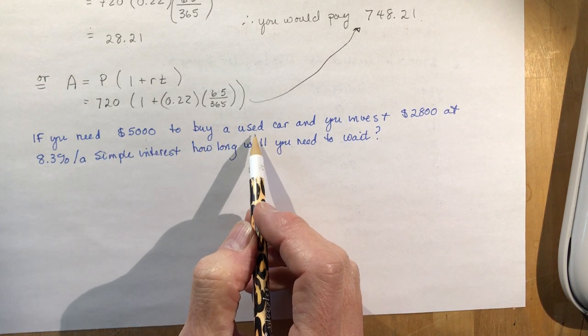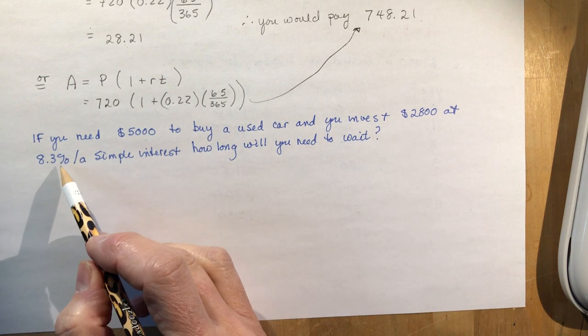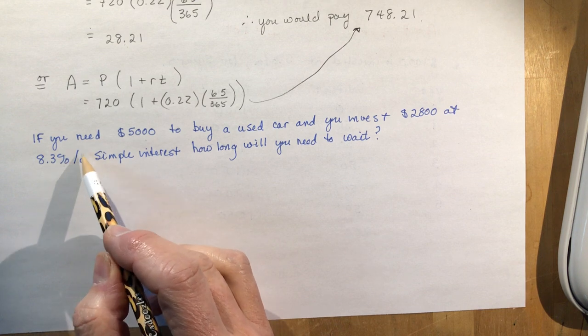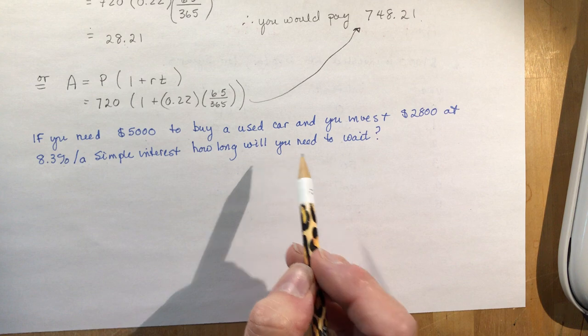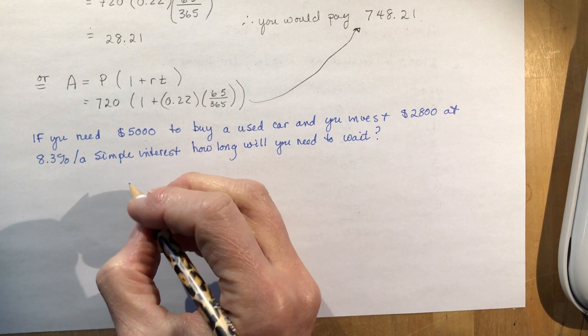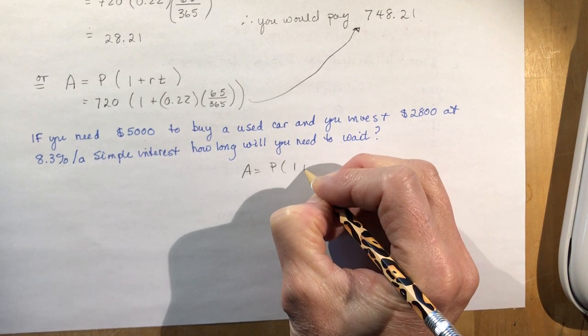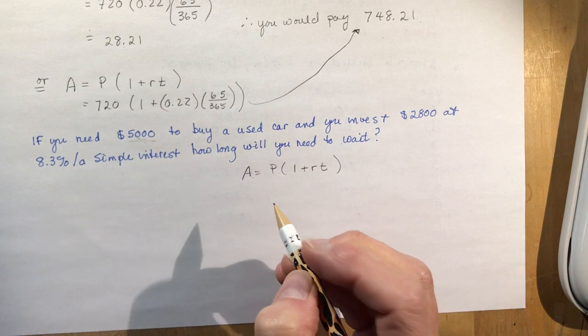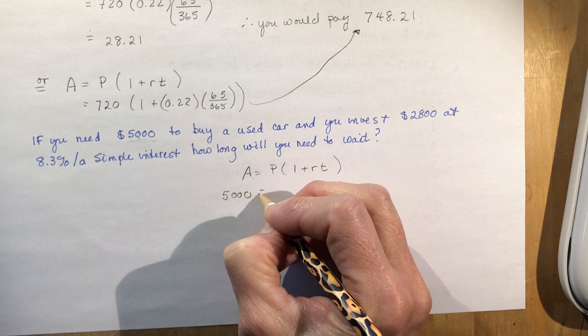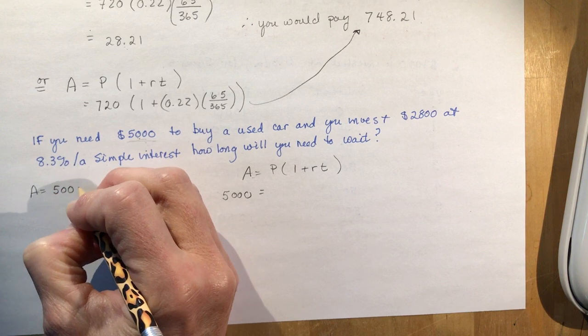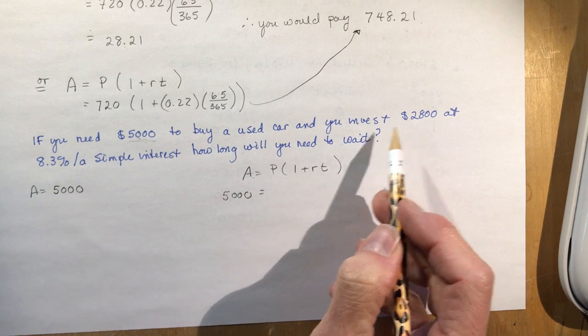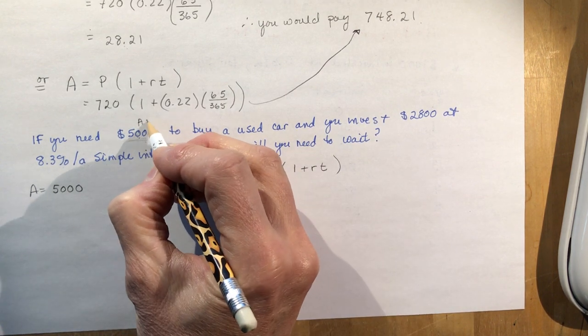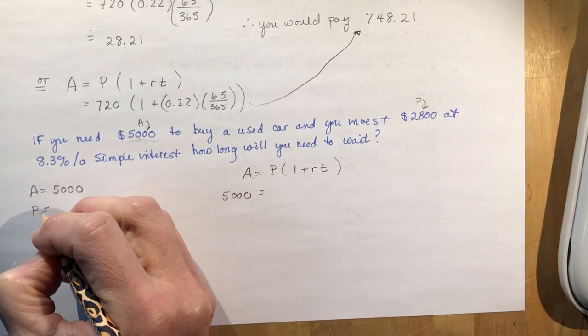If you need $5,000 to buy a used car and you invest $2,800 at 8.3% per annum simple interest, how long will you need to wait? Using our formula A equals P times 1 plus R times T. The amount I want is $5,000, so that's a future amount. So A equals $5,000. Always a good idea to write a box of information that you already know. You're going to invest $2,800. What letter does that represent? It's the P. So P equals $2,800. You're investing at 8.3% per annum, which is 0.083.